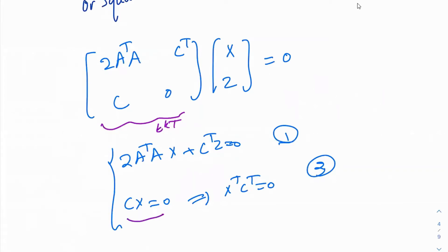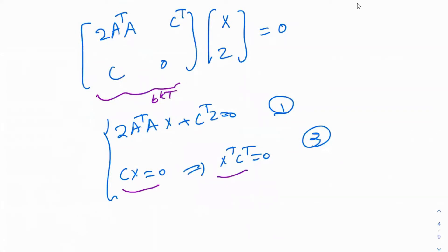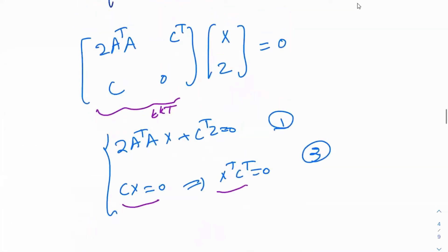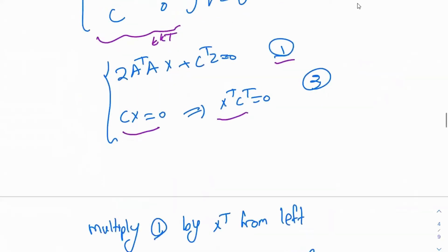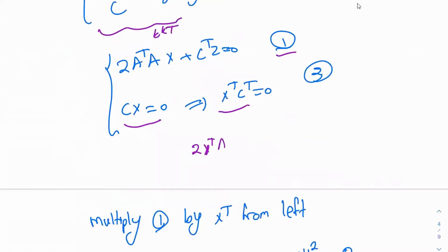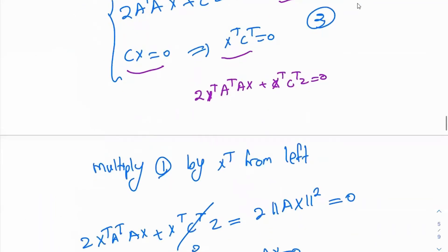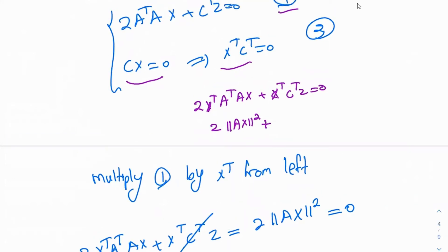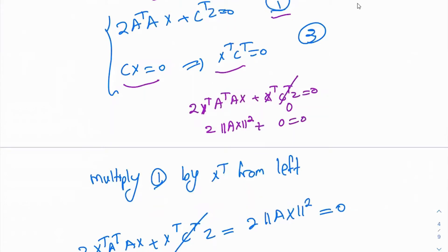Go ahead and calculate the transpose of this. You get x transpose C transpose equal to 0. So now, multiply the first equation by x transpose. You get 2x transpose A transpose AX plus x transpose C transpose z equal to 0. This is nothing but 2 times the norm of AX squared. And x transpose C transpose z is 0, because x transpose C transpose equals 0. So the norm of AX is 0, therefore AX is 0.